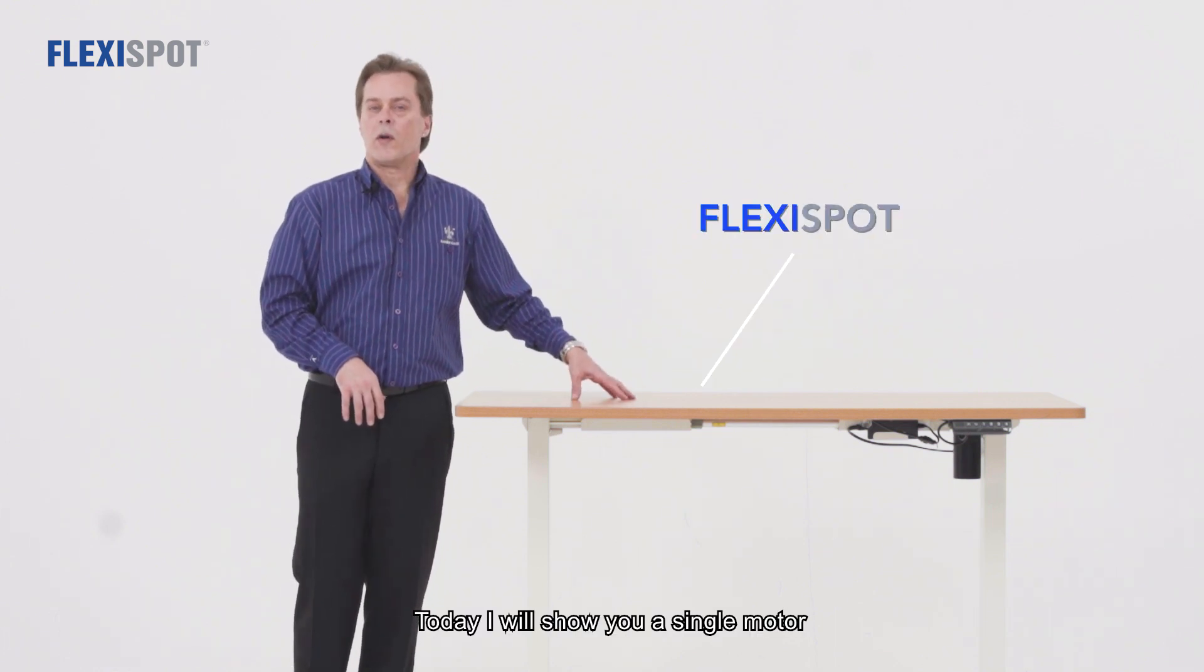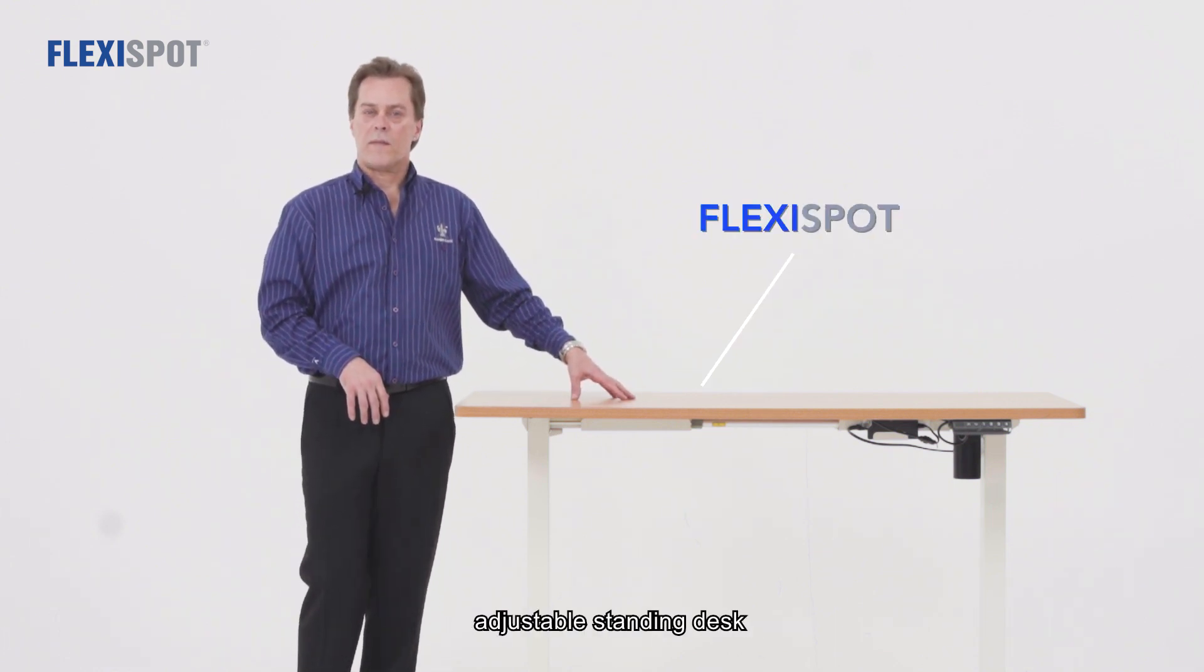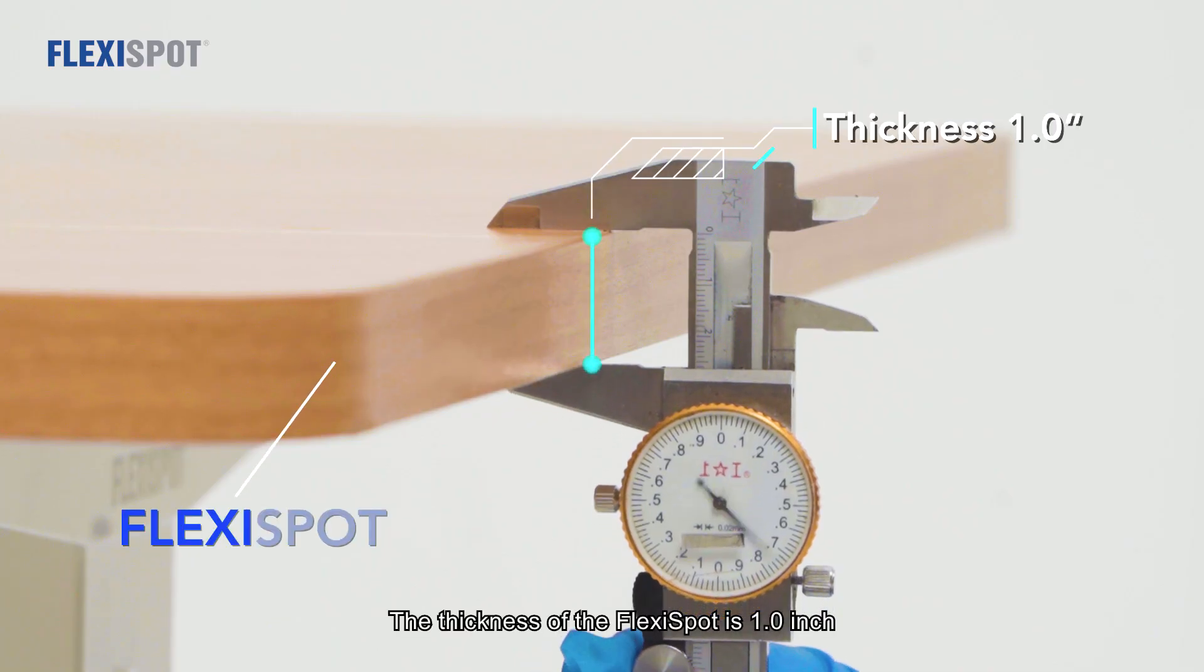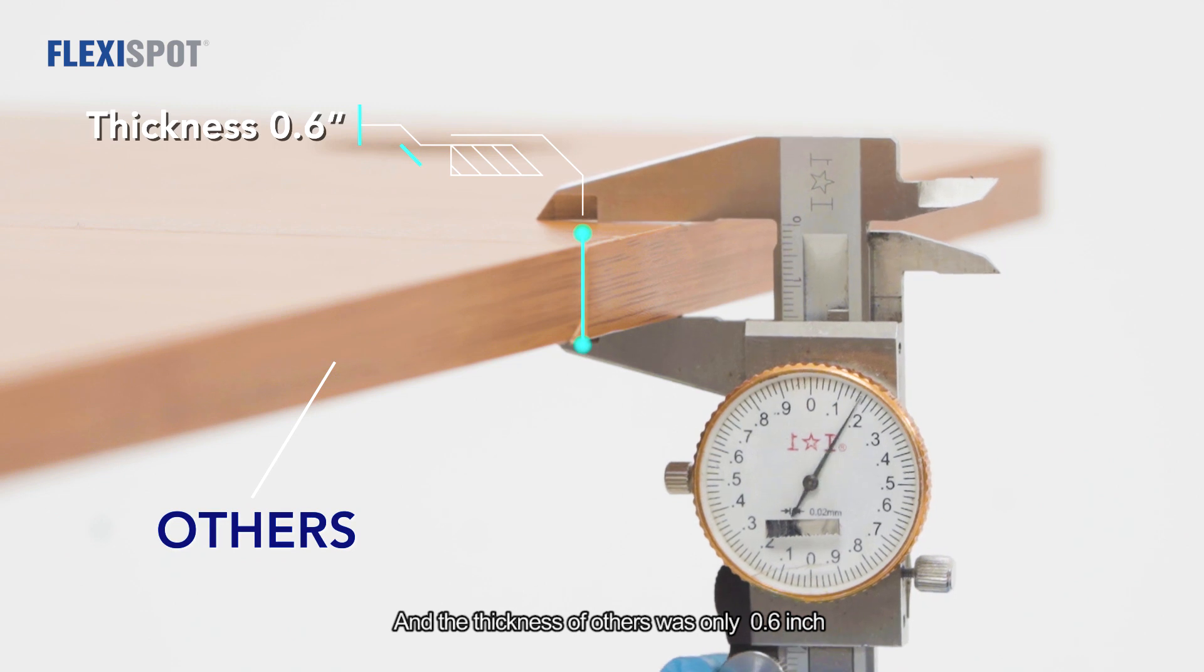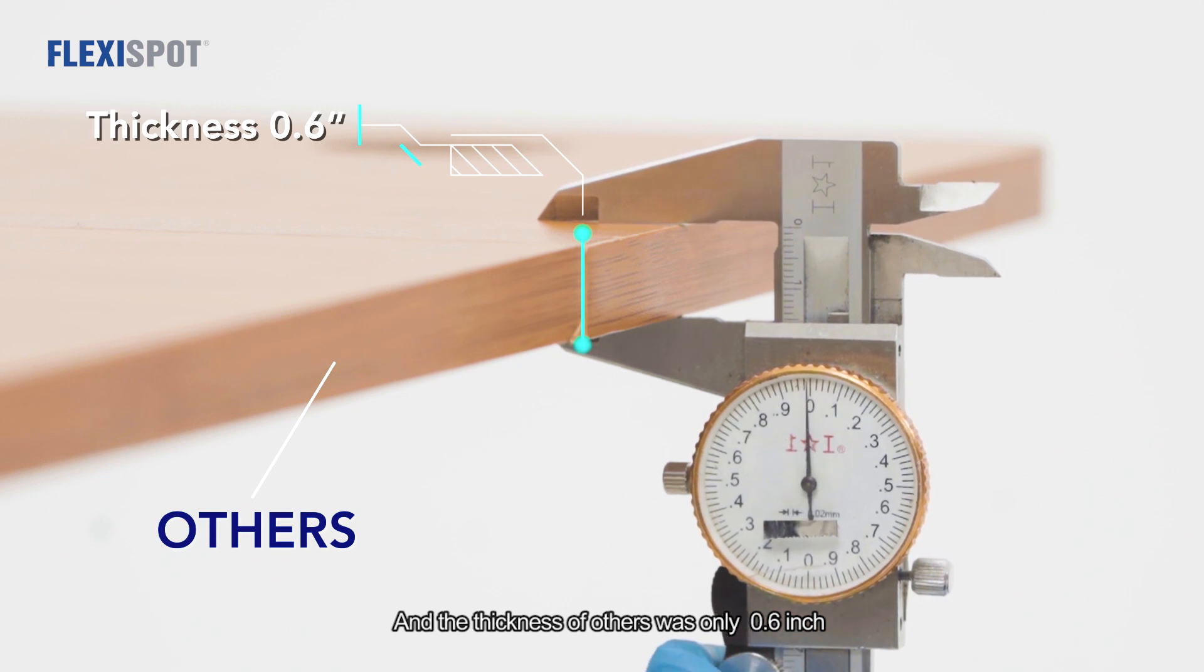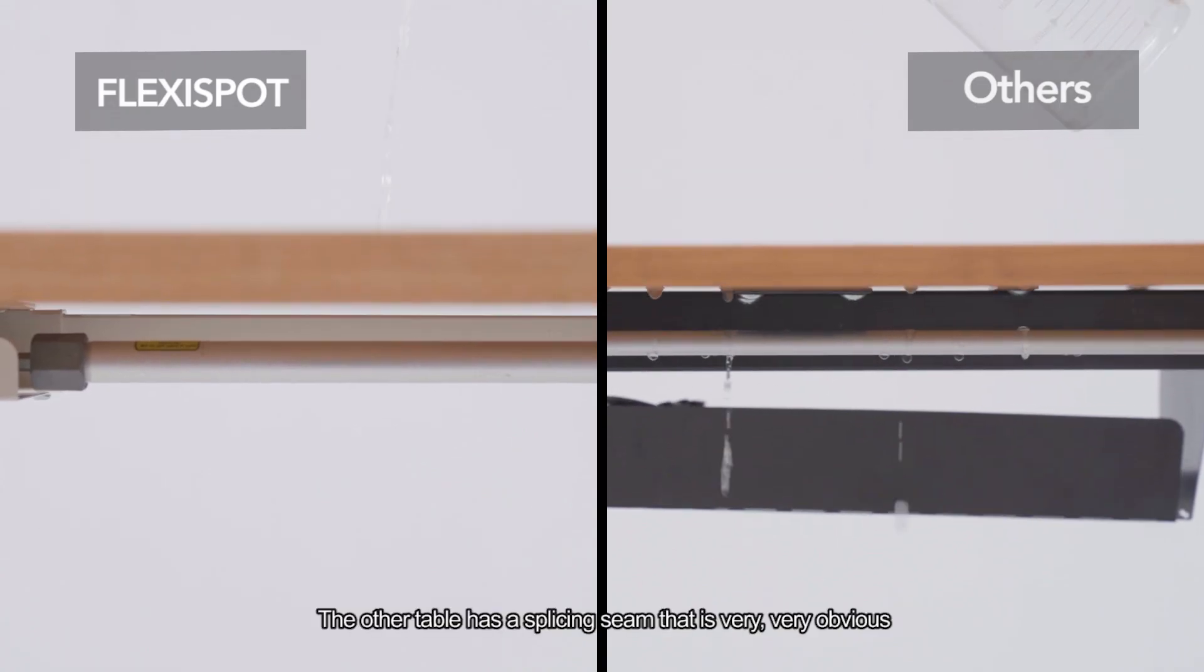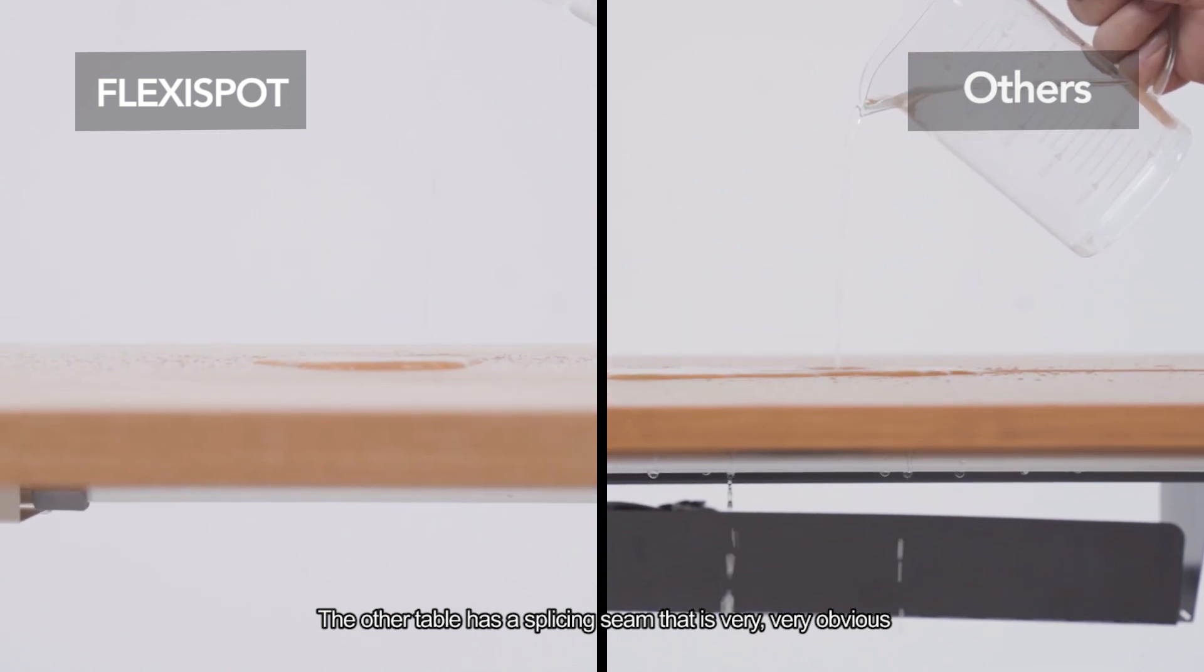Today I will show you a single motor adjustable standing desk. The thickness of the Flexi-Spot is 25mm and the thickness of the other is only 15mm. The other table has a splicing seam that is very obvious.